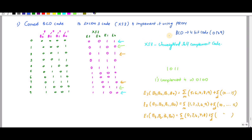What is XS3 code? XS3 code is an unweighted self-complement code. What is a self-complement code? If you see the blue color arrow — the 9's 1's complement is 0. For example, take 1011; if you look at the green arrow, 1011 is shown.